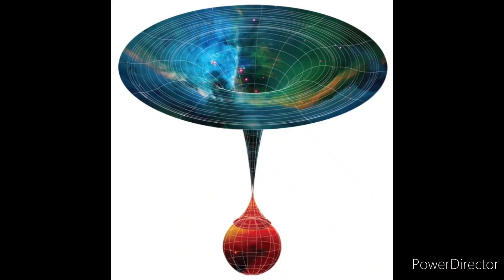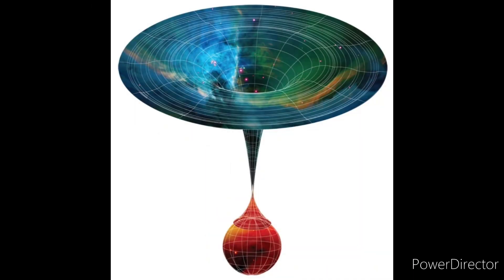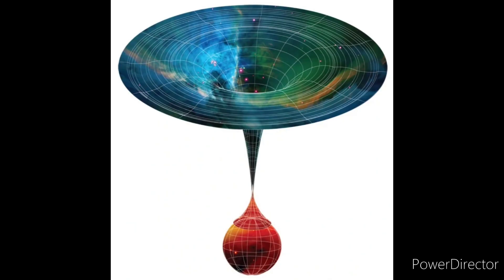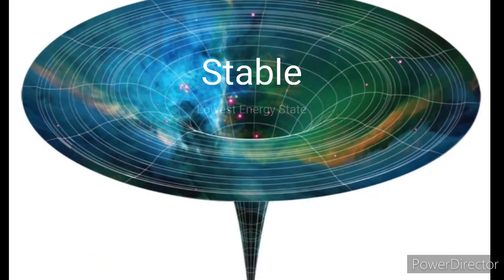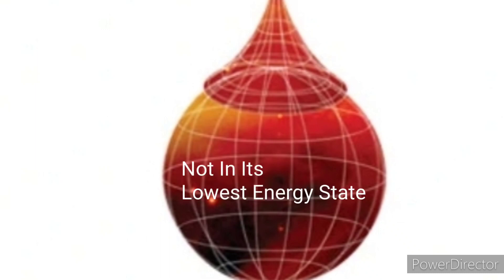At last, we have the False Vacuum Decay theory. This theory is quite complicated, and to explain it in simple terms, a false vacuum is when a vacuum isn't really stable, and for the maximum stabilization, the vacuum goes through a phenomenon called the False Vacuum Decay. A true vacuum state is stable because it is the lowest energy state, and a false vacuum state isn't fully stable because it isn't in its lowest energy state.